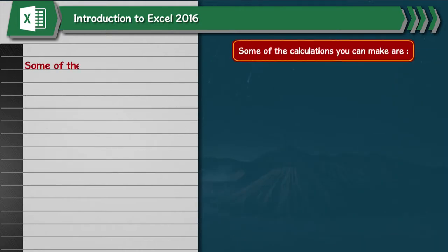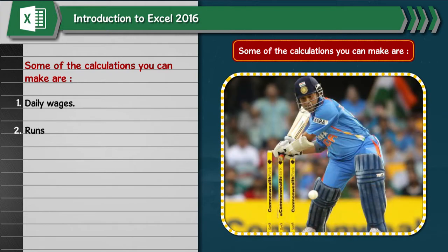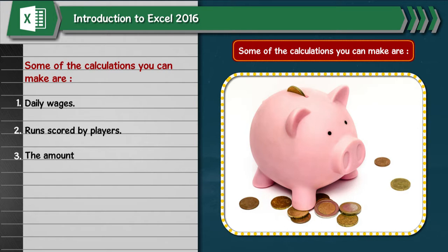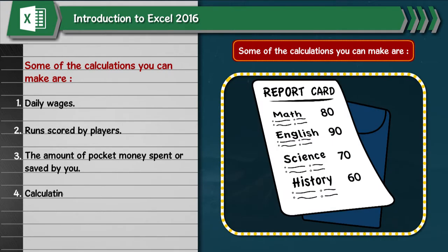Some of the calculations you can make are: 1. Daily wages, 2. Runs scored by players, 3. The amount of pocket money spent or saved by you, 4. Calculating the marks scored in a test.